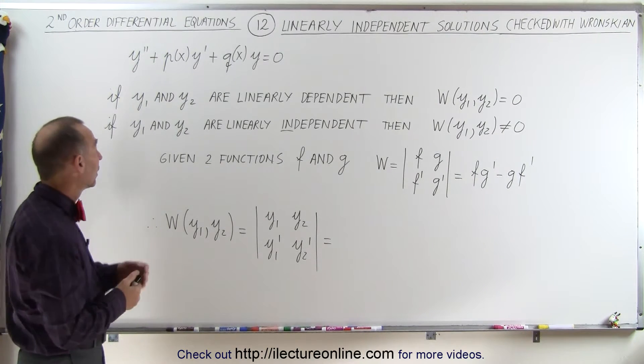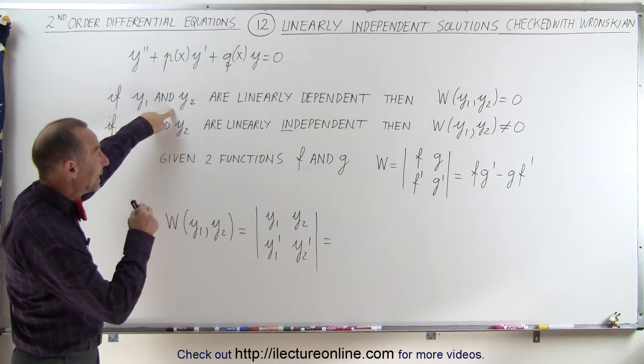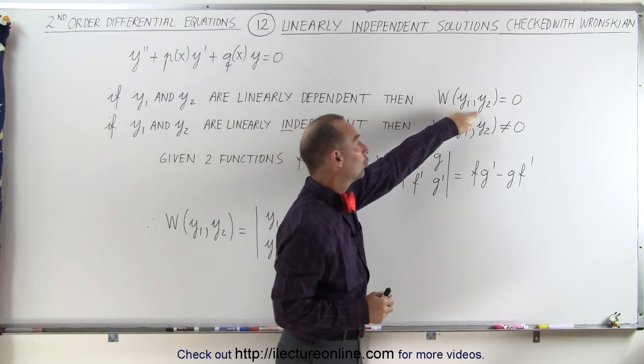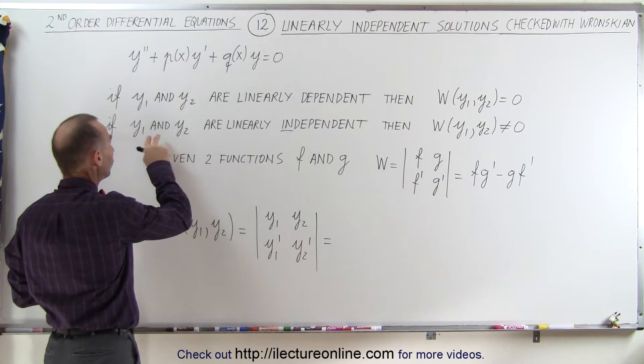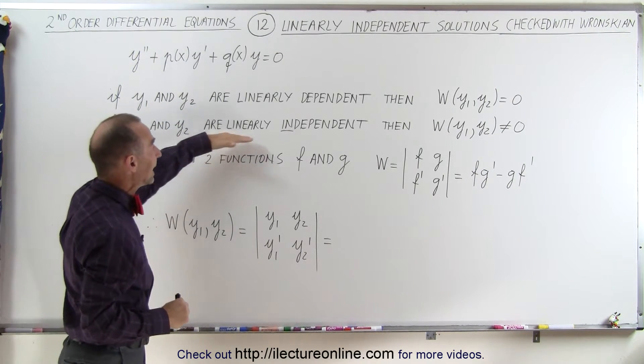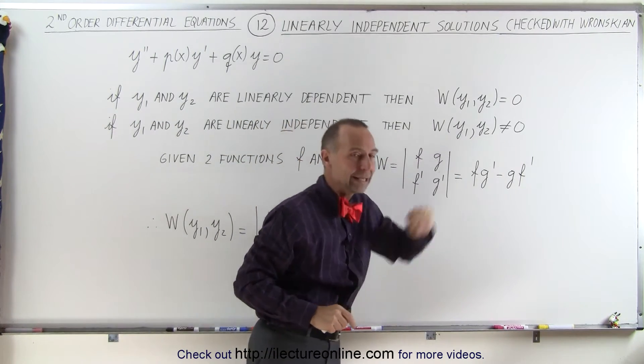We have a test for that. If y1 and y2 are linearly dependent solutions, then the Wronskian of those two solutions will be equal to zero. However, if y1 and y2, which are solutions to this differential equation, are linearly independent, then the Wronskian of those two will not equal zero.